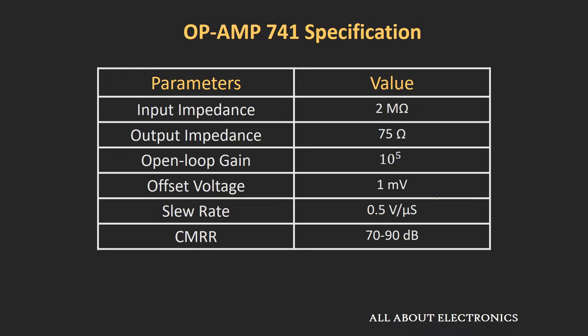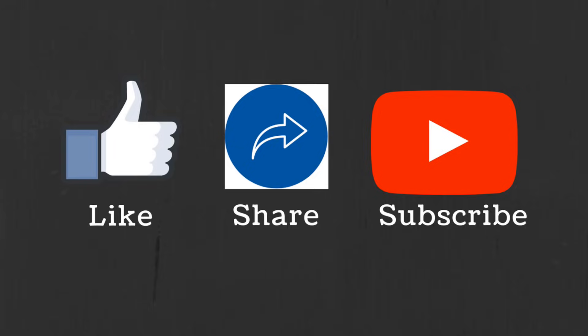So far we have seen this op-amp in an open loop configuration, meaning there was no feedback from output to input. In the next video, we will see what happens when we provide feedback from output to the input side. I hope in this video you understood the different characteristics of this op-amp. If you have any question or suggestion, let me know in the comment section below. If you like this video, hit the like button and subscribe to the channel for more such videos.